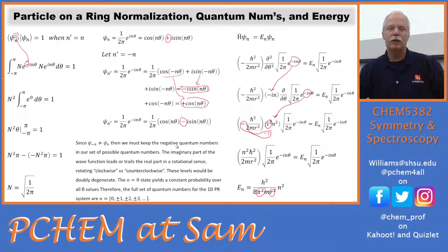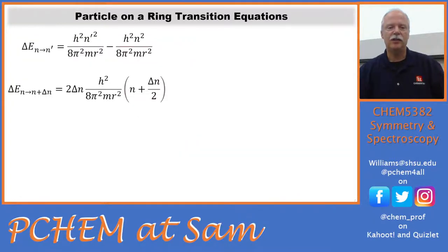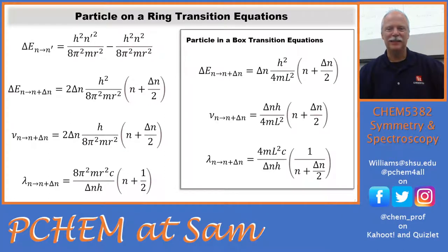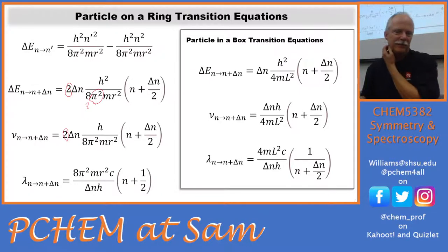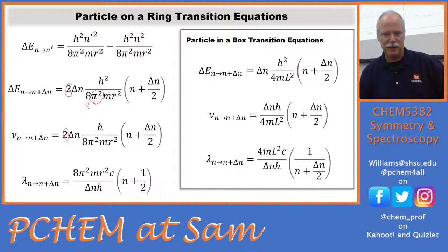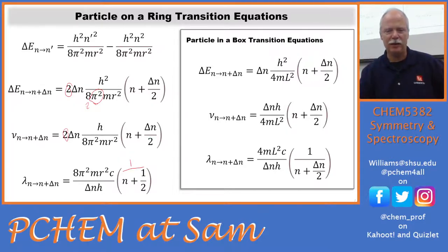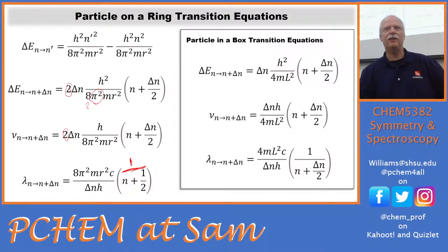We can do the transition equations — all these one-dimensional systems are very similar. There's another factor of two in the energy and frequency equations. There's a pi squared in there. I think I made a mistake on the wavelength — be sure to correct that; it's one over n plus a half, just like the particle in the box. It's amazing how you don't catch your errors until you're presenting.